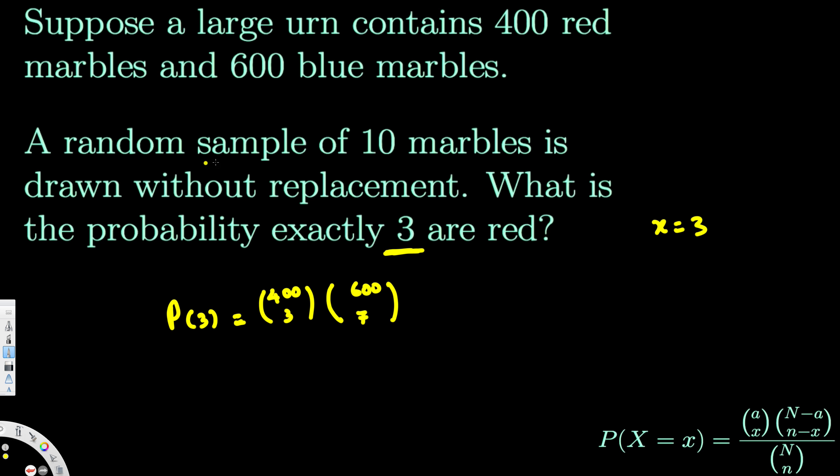And we are taking 10 samples from the 1000, because 600 blue plus 400 red. So from 1000 we are taking 10 samples. So this is going to be 1000 choose 10.